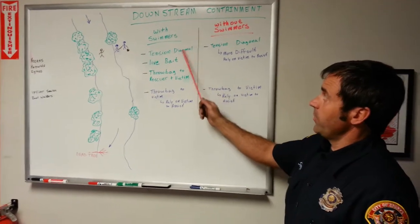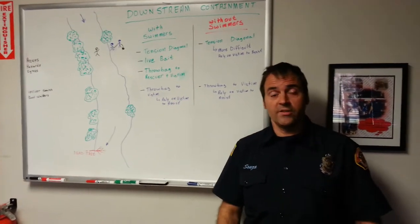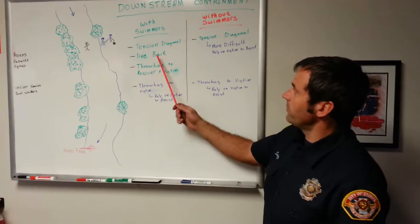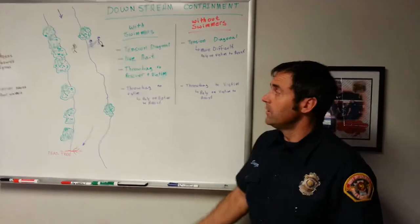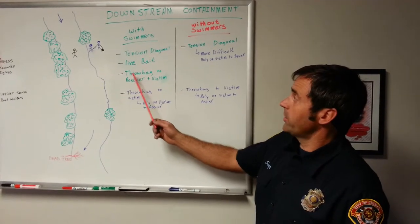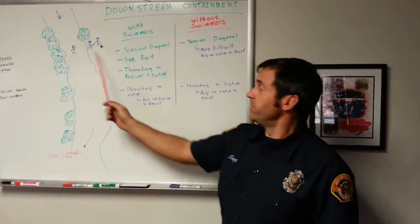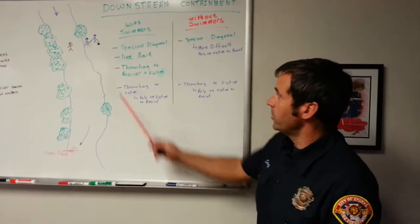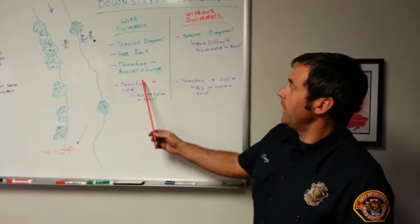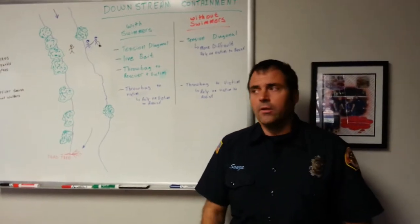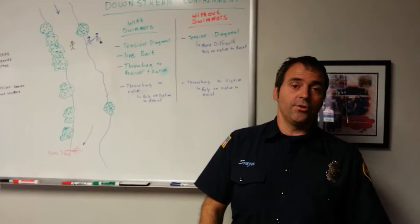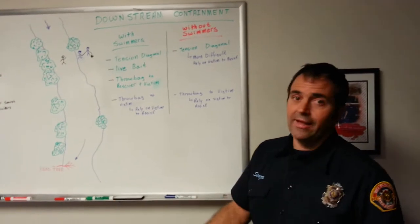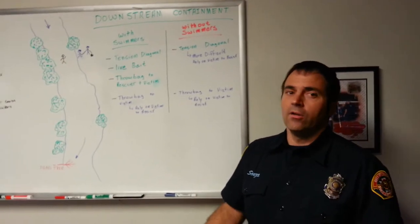If we show up with swimmers, we have a lot of options for downstream containment — it does not have to be only a tension diagonal. If you have a swimmer there, you have the option for a live bait rescue. The swimmer can go upstream, find the victim, catch them, and a non-wet rescuer can throw a throw bag to the victim and swimmer and pull them to shore. You also always have the option of a throw bag directly to the victim, though that's not ideal because you're relying on the victim to rescue themselves, hang on, and know what to do — and a lot of things can go sideways.